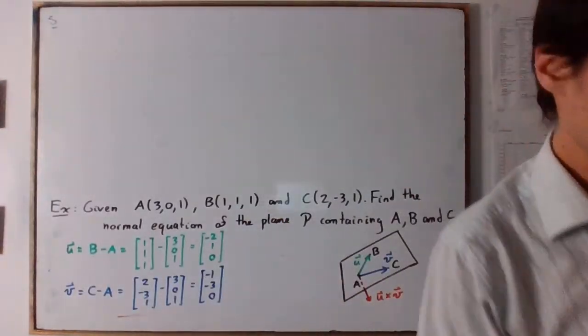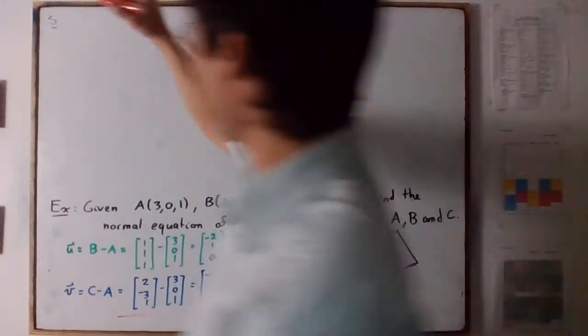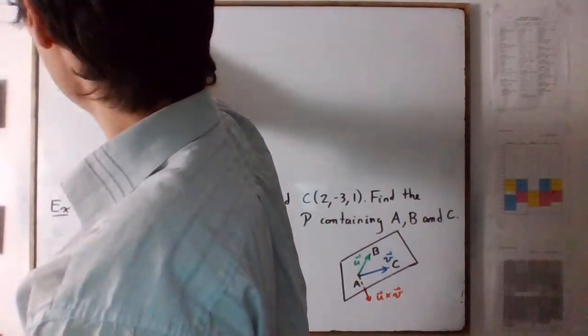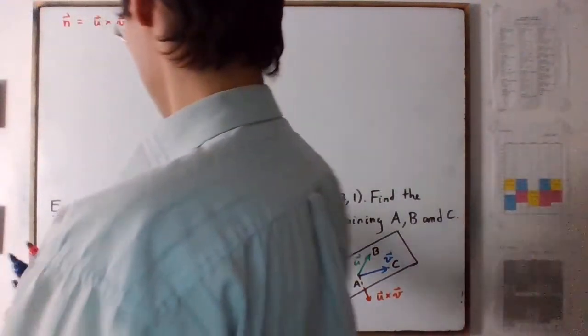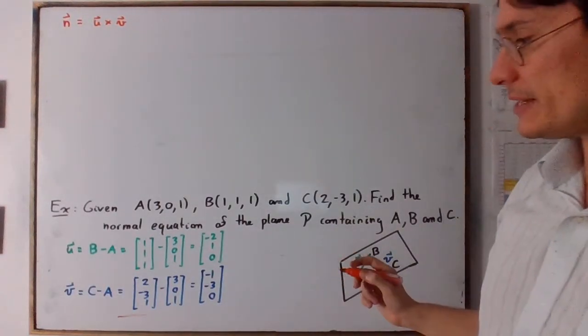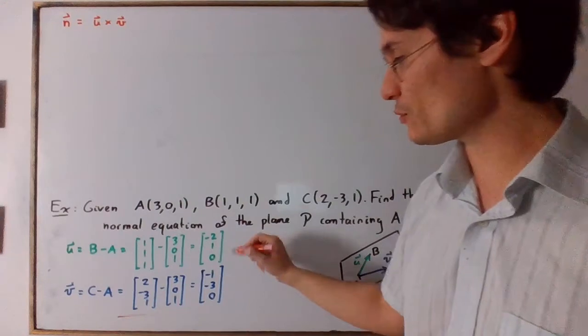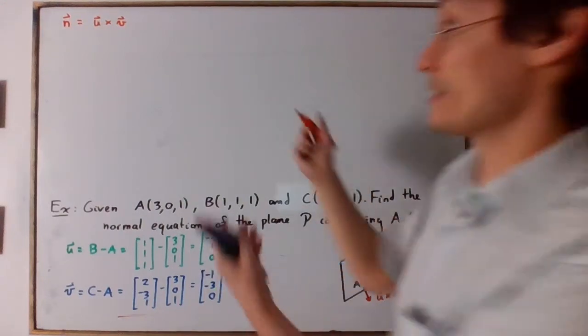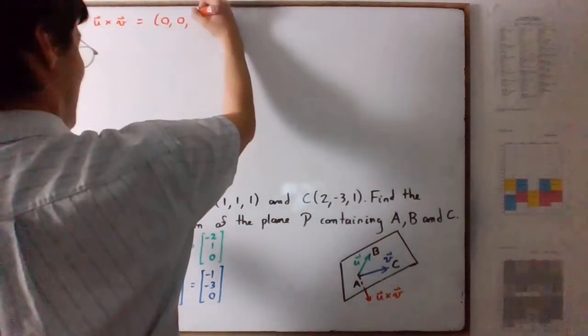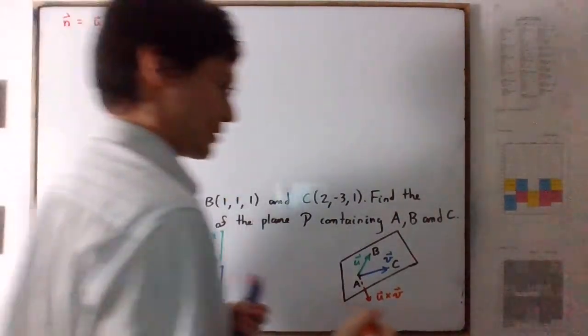So what do we do now? Well, the vector n will be the cross product of U and V. And if I remember correctly, so this determinant, we have literally just 7. So that's it. The cross product was, the normal vector was 0, 0, 7.